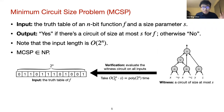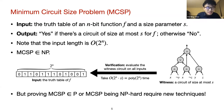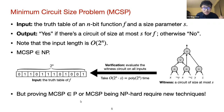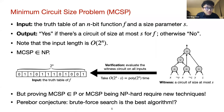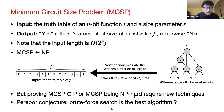Surprisingly, this is probably the best unconditional result known. Showing MCSP in P or showing MCSP is NP-hard turns out to be surprisingly difficult. Lots of evidence shows that standard techniques to place MCSP in P or show NP-hardness would result in surprising complexity consequences. Moreover, there is even a conjecture — the "meta" conjecture — stating that the best way to solve MCSP is by brute force, which is indeed the current best algorithm.